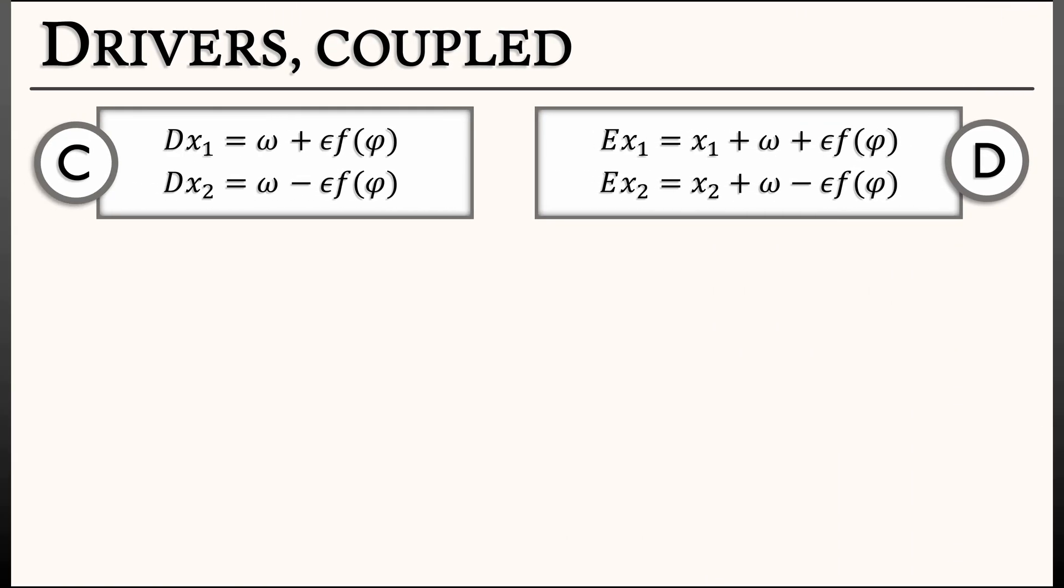Let's consider the dynamics of the state difference. Let's consider how phi evolves over time, either in continuous time, in which case we're going to compute d phi, or discrete time, in which case we're going to compute e phi. Now, you might say, but we don't know what phi is as a function of time, so how can we take a derivative? Ah, but wait, we know by definition that phi is x2 minus x1.